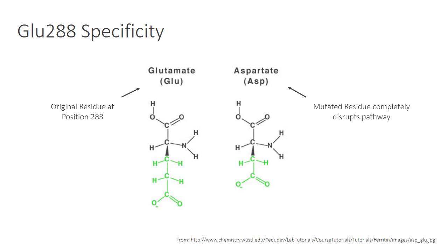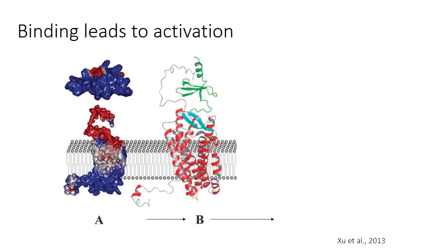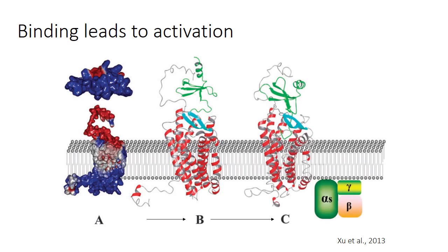The binding of ligand CXCL12 to CXCR4 is theorized to activate subsequent pathways by bringing the transmembrane alpha helices closer together and by grouping the positively charged residues on the intracellular side, as shown in step B. This will activate the G-protein complex, as shown in step C.